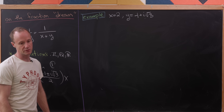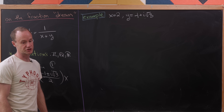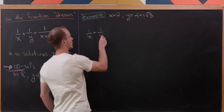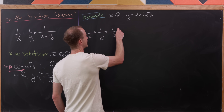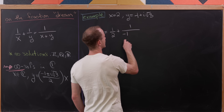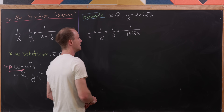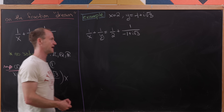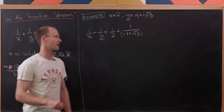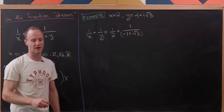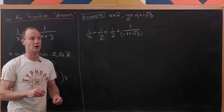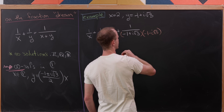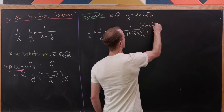Let's take x = 2 and y = -1 + i√3. So 1/x + 1/y = 1/2 + 1/(-1 + i√3). To simplify the second term, we multiply by the complex conjugate (-1 - i√3) in both the numerator and denominator, so we'll have a real denominator.